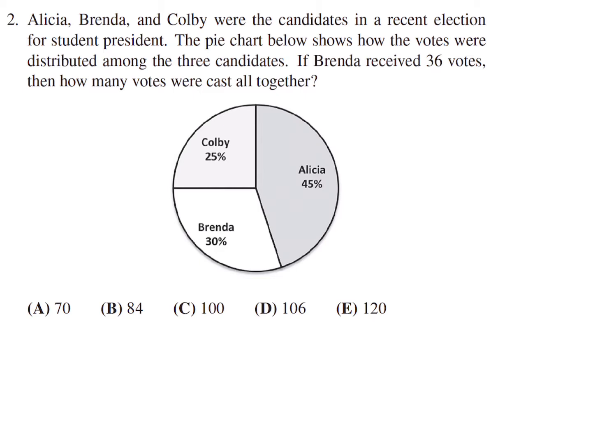Alicia, Brenda, and Colby were the candidates in a recent election for student president. The pie chart below shows how the votes were distributed among the three candidates. If Brenda received 36 votes, then how many votes were cast altogether?